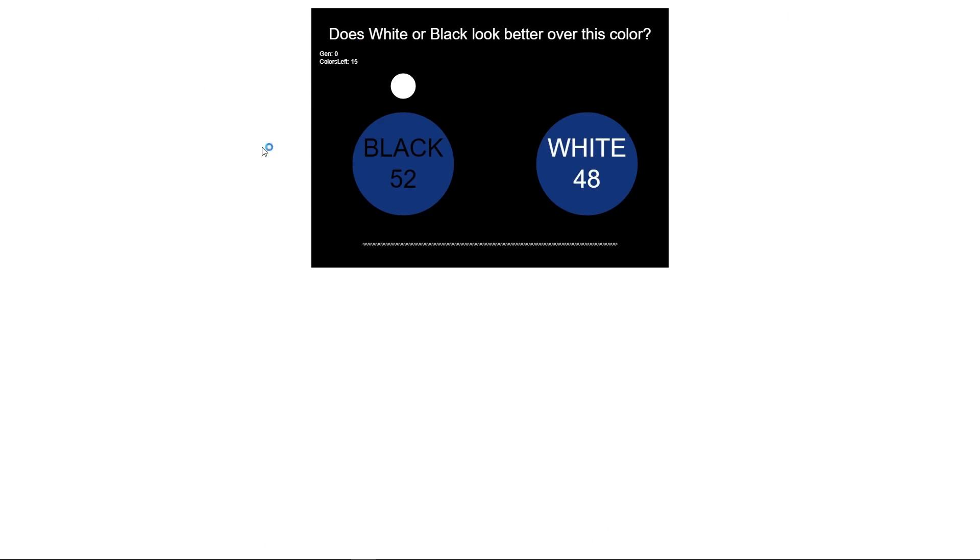Here is my ITP demo. You are asked a simple question: Does black or white look better over this randomly generated color? You pick your answer some 100 times, and this predictor will learn if black or white looks better over random colors. Easy to grasp, right?